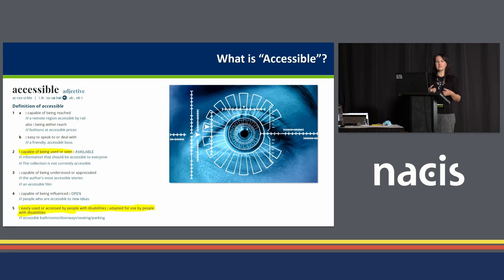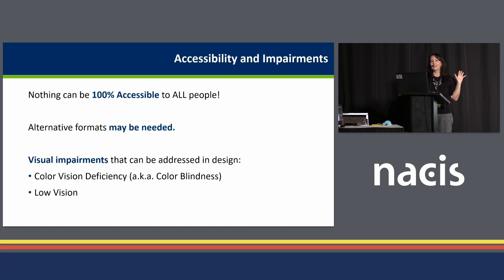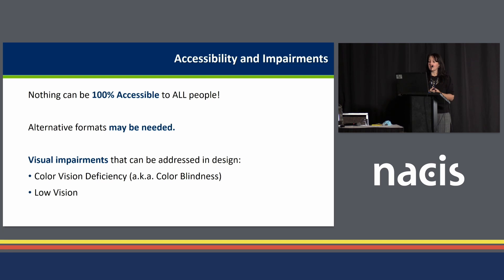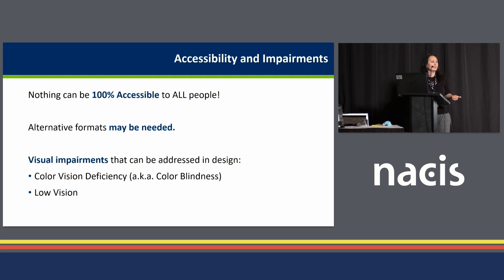One of our big tasks was figuring out what does an accessible map mean. The dictionary defines accessible as being capable of being used or seen or easily used or accessed by people with disabilities. Nothing can be 100% accessible to all people right out of the box — you may have to consider alternative formats. But visual impairments we can address in our design are color vision deficiency, otherwise known as color blindness, or low vision. We can do our best to make things as accessible as possible to more users.